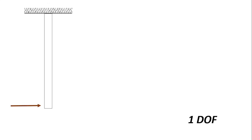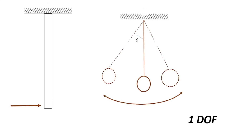We can also have a column suspended and displaced from one end, which can be modeled using the simple pendulum equation, assuming it is oscillating like a pendulum. This is also another example of a one degree of freedom system, because at every point in time we can describe the displacement from its original position by an angular displacement theta.